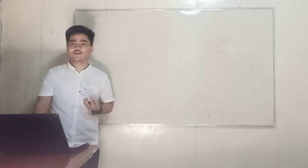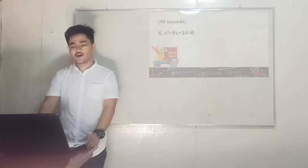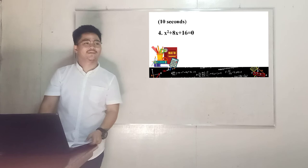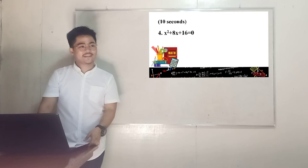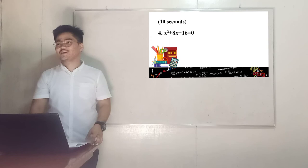Number 4: x squared plus 8x plus 16 equals 0. Time starts now. Okay, time's up. x equals negative 4. Yellow got the correct answer, green team got the correct answer, red team got the correct answer, and also orange team got the correct answer. Very good.